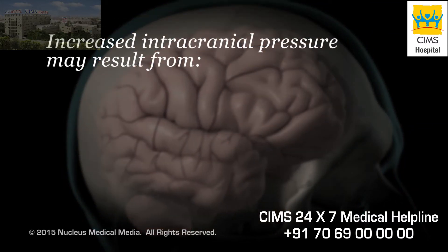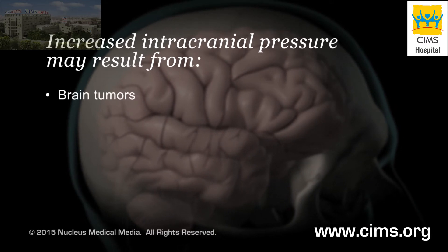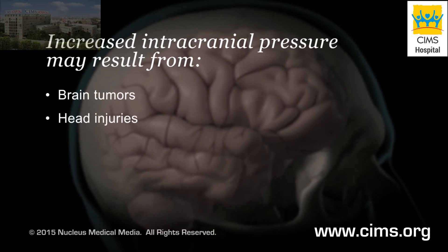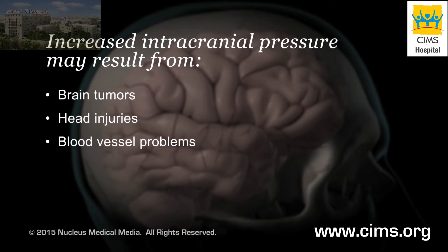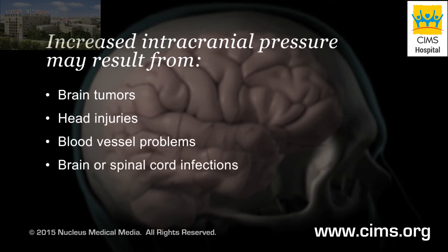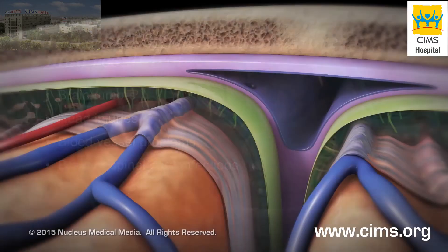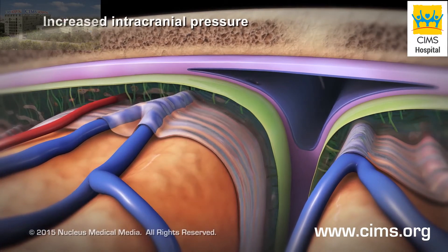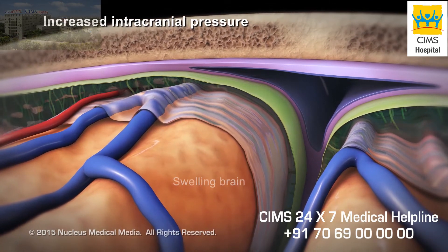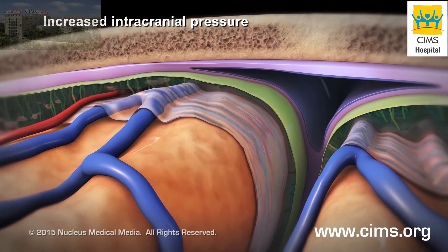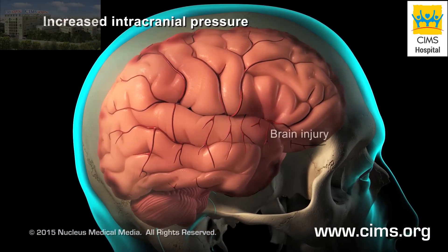Increased intracranial pressure may result from brain tumors, head injuries, problems with your blood vessels, cells, or infections in your brain or spinal cord. These conditions put pressure on your brain and may cause it to swell or change shape inside your skull, which can lead to serious brain injury.